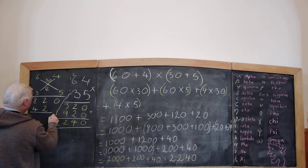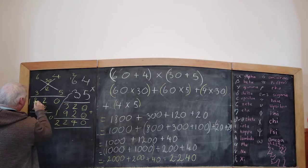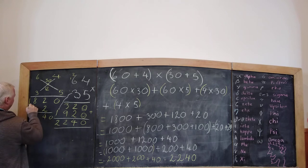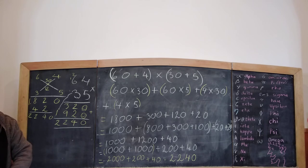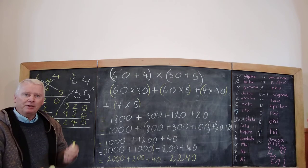So 0 comes down. 2 and 2 is 4. 8 and 2 is 12. Carry the 1. Wait a moment. It's 2240. And let's try the Italian or the Lattice method.